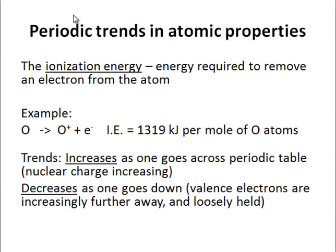Now to move to the last topic for this unit, periodic trends in atomic properties. The ionization energy is defined as the energy required to remove an electron from the atom. For example, you can go from O to O+. This means this is the electron that's been taken away. The ionization energy is 1319 kilojoules per mole of oxygen atoms, and you can imagine removing a valence 2p electron to make O+.